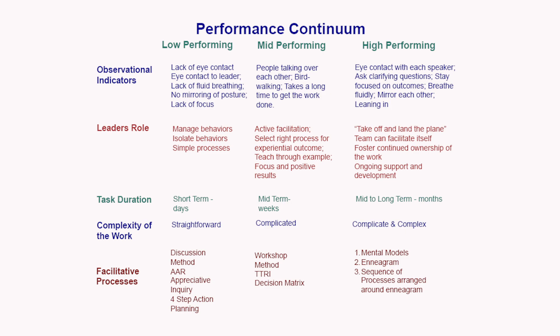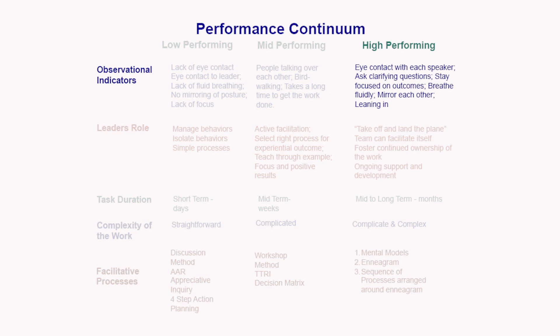In a high performing team, you see a lot of modeling and mirroring — people looking at whoever is talking, nodding their heads together as they acknowledge points. They ask a lot of clarifying questions before offering opinions, and there's a lot of synchrony. You can just see it — they're in a flow with each other. Those are the indicators that allow you to diagnose where you are.